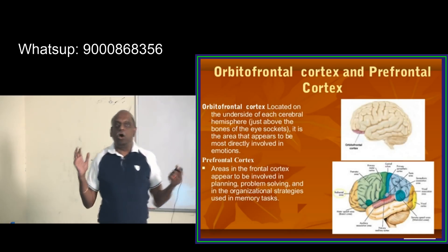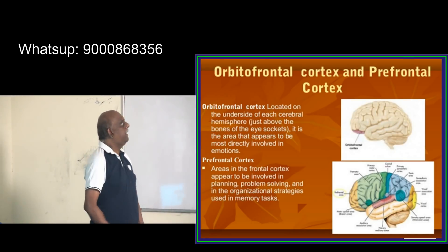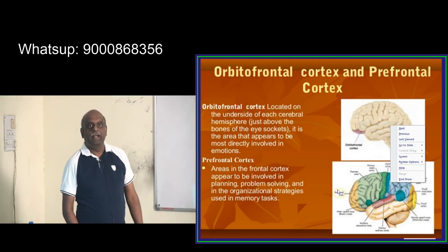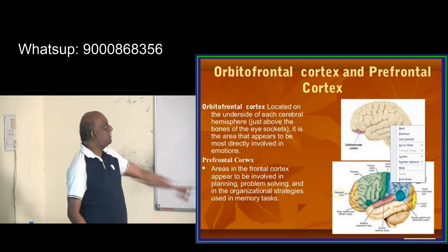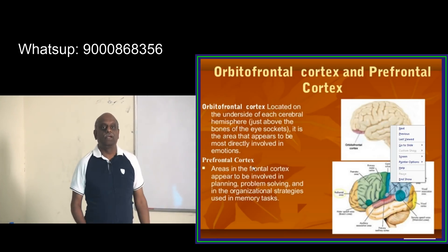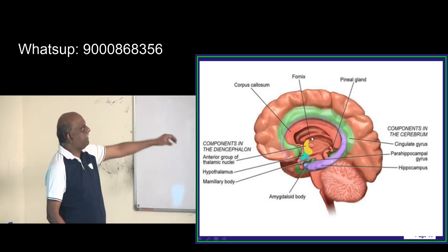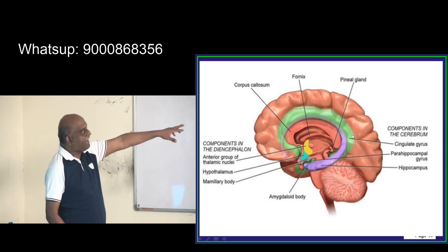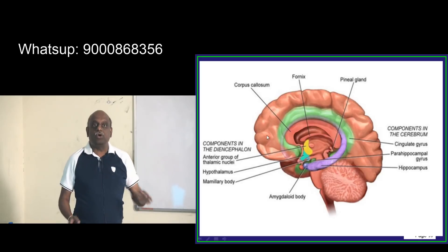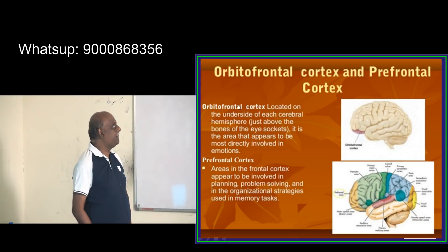The orbitofrontal cortex is located underneath the cerebral hemisphere. It is the area most directly involved with our emotions, and there is a connection between the cingulate gyrus and the orbitofrontal cortex which constitutes the Papez circuit — this is what you have to basically remember.